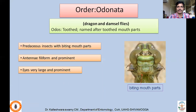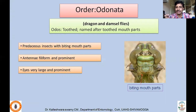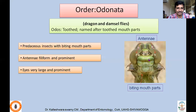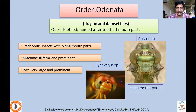Coming to the next order — order Odonata, which includes both dragonflies and damselflies. Etymologically, Odonata is derived from 'odos' meaning toothed, named after toothed mouthparts. Mandibles and maxillae have denticle-like structures, and with the help of these they feed on prey collected using the legs. Important characters of Odonata: they are predaceous insects with biting mouthparts. Antennae are filiform and prominent, placed above the mouthparts between the eyes. Eyes are very large and prominent — there are a large number of ommatidia, that is why they are very good flyers.